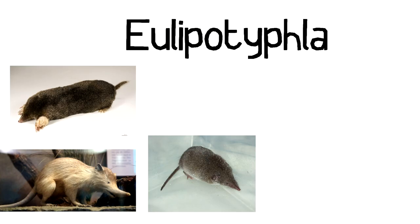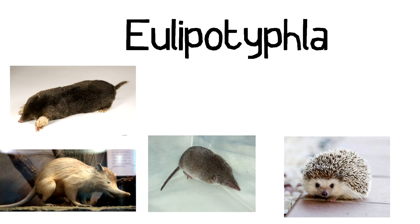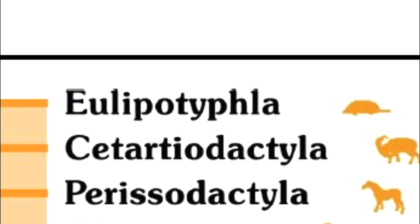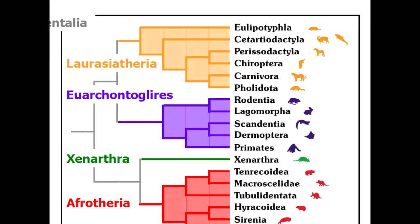Soricomorpha belongs to the order Eulipotyphla, which also includes hedgehogs and gymnures. This order, in turn, is part of the clade Laurasiatheria, which we already know from the lecture of Thomas Lehmann.